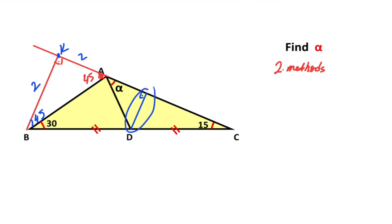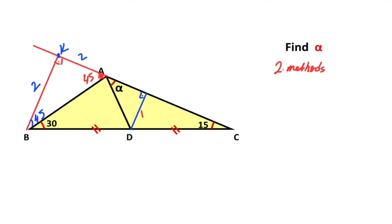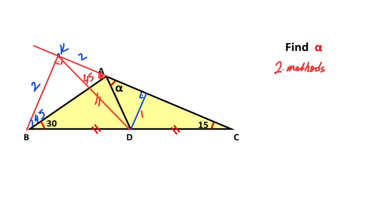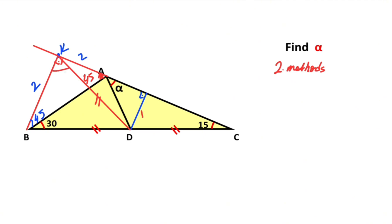Then if we draw one more perpendicular line, note that this blue line is the midline. Therefore if here is two units, this length must be equal to one unit. Then if we connect these two points, notice that the base will be divided into two equal parts and here is 90 degrees, so this part must also be equal to the same value.